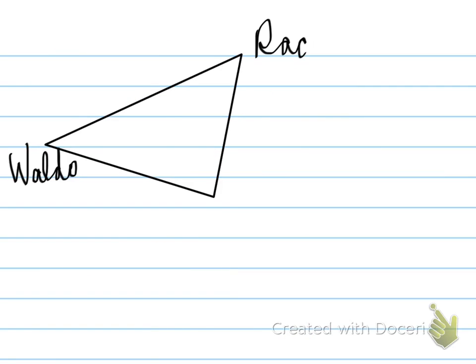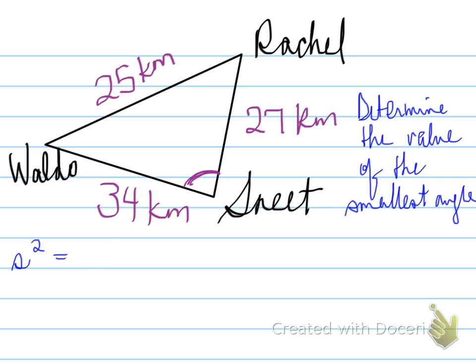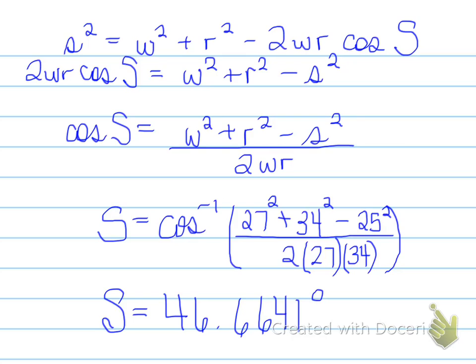All right, another example would be if we had to find the smallest angle. And in this case, who would be the smallest angle? Smallest angle would be Sneet. And we would have to determine the value of the smallest angle. To do that, we look at this whole problem. Using the cosine law, we solve for the angle. And it turns out the angle for Sneet is equal to 46.6641 degrees. So it's just another example that was done in class so that you know how to work these problems.